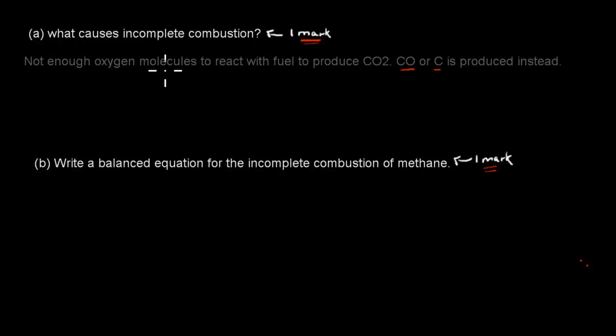Not enough oxygen molecules to react with fuel to produce CO2. Carbon monoxide or carbon soot is produced instead. So that is the biggest problem. We don't have enough of these O2 molecules. Because we don't have enough O2 molecules, we produce carbon monoxide and carbon soot instead of carbon dioxide.